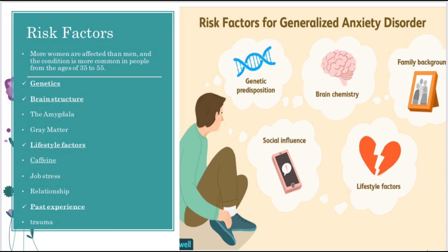And the next risk factor is brain structure. Brain structure mein agar koi problem ho to automatically GAD cause hoga. Brain structure mein amygdala, jo limbic system ka part hai, bohot important role play karta hai, because it controls our emotions and thoughts. Amygdala mein jo gray matter ka volume hai, woh increase hone ki wajah se GAD cause hota hai, jis ko hum right vitamin bhi kehte hain.